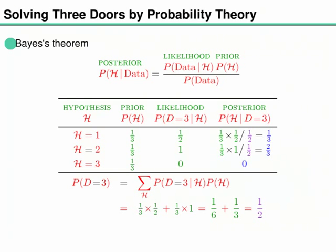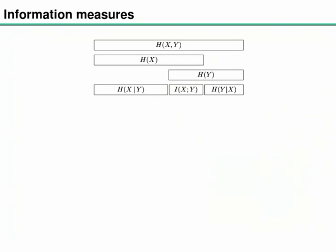That is Bayes theorem, and we'll need it when playing with channels if we ever want to infer what the input of a channel was when we see the output. Last time we also defined information measures for a joint ensemble with two random variables: the joint entropy, marginal entropies H(X) and H(Y), conditional entropies H(X|Y) and H(Y|X), and the mutual information I(X;Y), which measures how much dependence there is between the two random variables.